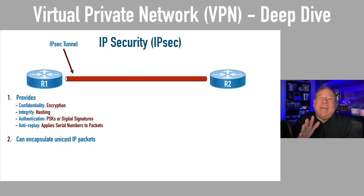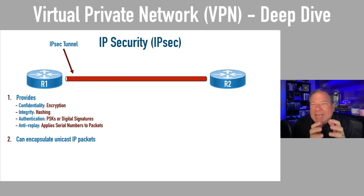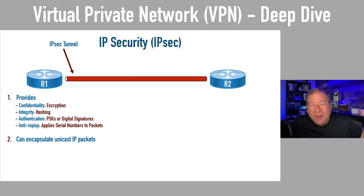Remember how GRE was super flexible in that it could encapsulate just about anything? IPsec is not so much. IPsec can only encapsulate unicast IP packets. Is that a problem? OSPF hello messages and many routing protocols use multicast traffic. We need multicast support. Maybe broadcast sometimes too. We certainly need more than just unicast IP packets — that's a problem that we'll address in a few moments.